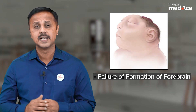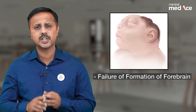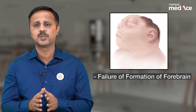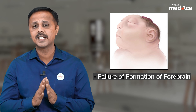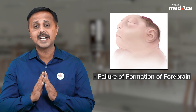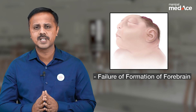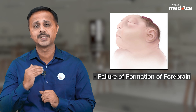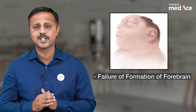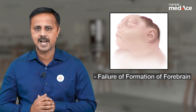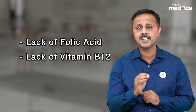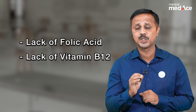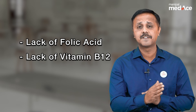What exactly happens in anencephaly? There is failure of formation of the forebrain. The brainstem and the spinal cord are usually formed normally, but the forebrain is completely absent. This exposes the part of the brain that has developed onto the exterior or the surface of the head and the back.